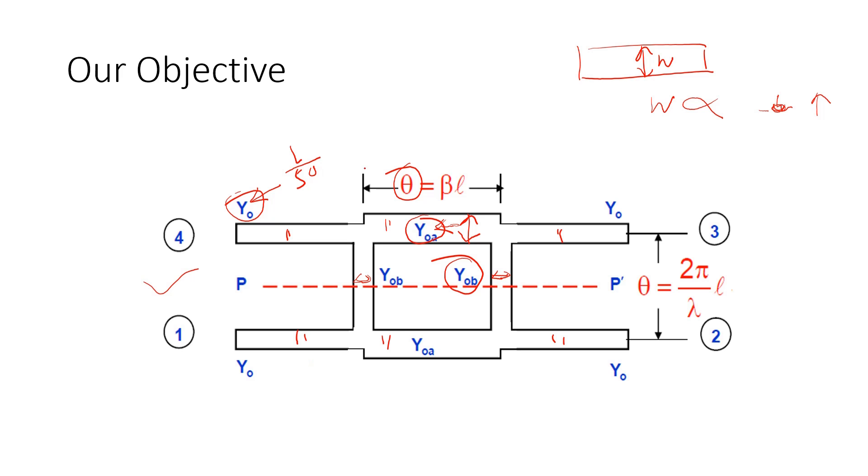Something additional is here - we are fixing the length of this branch and length of this branch. This thing we have not done in our microstrip line design. But here, length is very important, because if you change the length, your answer will get changed. And this should be theta equal to beta L. And the length of these legs you can take anything, no issue. It's just to connect it to the four ports of your measurement.